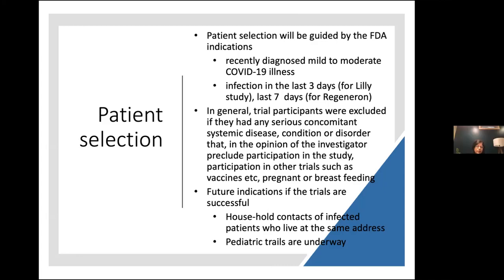If the household contact study is successful, even household members could be candidates for treatment, and pediatric trials are also underway. This is similar to Tamiflu — dispensed not only for someone infected with influenza but also for household contacts as prophylaxis. However, monoclonals are not as simple as taking an oral pill; they currently require IV or subcutaneous infusion, making them clearly more complicated to administer.